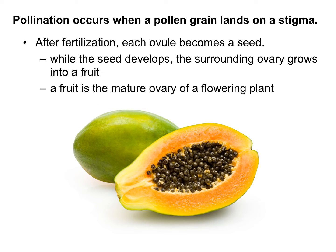After fertilization, each ovule will become a seed, and while the seed develops, the surrounding ovary grows into a fruit. This papaya has a ton of seeds, meaning the flower had a ton of ovules inside the ovary. The fruit is the mature ovary of a flowering plant. Weird thought — you're eating an ovary when you eat fruit. All flowering plants produce fruits, but not all are edible like this papaya.